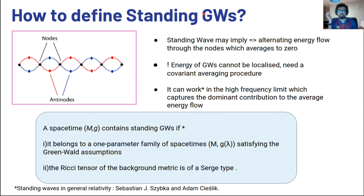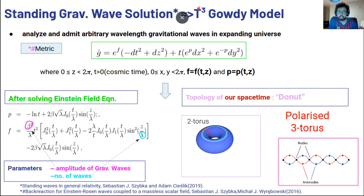So how to define standing gravitational waves? Obviously you would have some nodes and antinode formation. Standing wave may imply that there is an alternating energy flow through the nodes which averages out to zero. But since energy of gravitational waves cannot be localized, you need a covariant averaging procedure. It turns out in this paper that if you consider the high frequency limit, you can capture the dominant contribution of the average energy flow, and then your spacetime will contain standing gravitational waves if it belongs to one parameter family of spacetime satisfying the Geroch wall assumptions, and second that the Ricci tensor of the background metric is of such type. Such is the spacetime which we studied, which is officially known as the T3 Gowdy model.